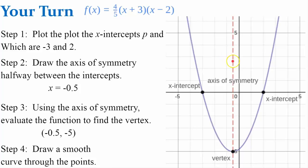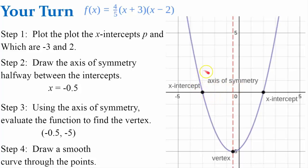Draw a smooth curve. The axis of symmetry is the line x equals negative one-half. The vertex is on that line at (negative one-half, negative 5). And the x-intercepts are negative 3 and positive 2.